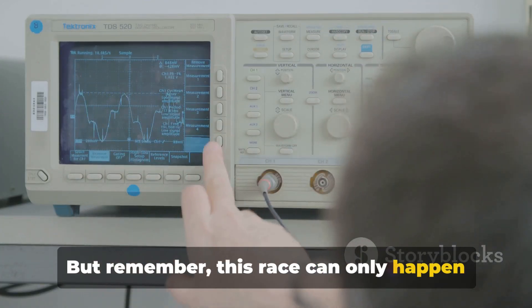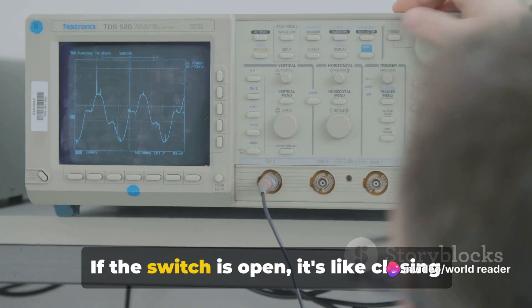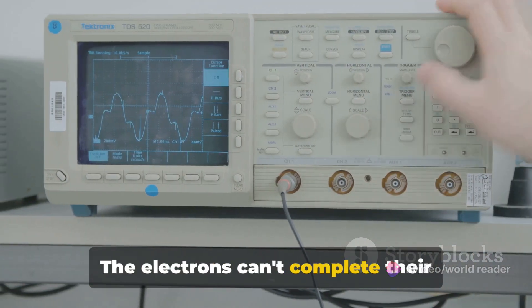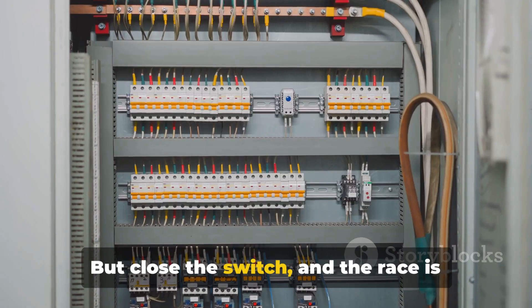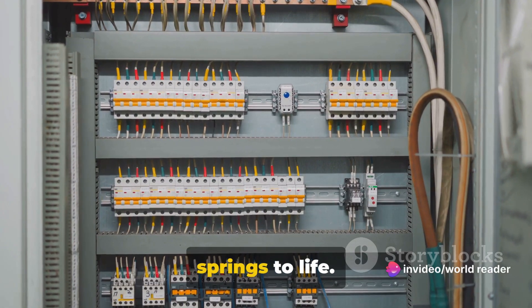But remember, this race can only happen if the circuit is complete. That's where the switch comes in. If the switch is open, it's like closing the race track. The electrons can't complete their journey and the load won't receive any energy. But close the switch and the race is back on. The current flows and the load springs to life.